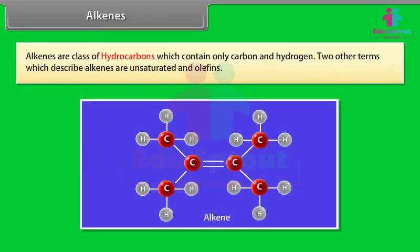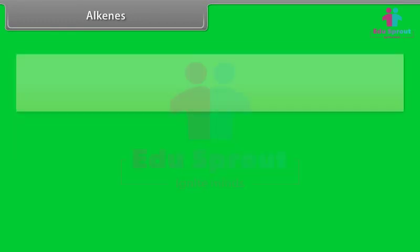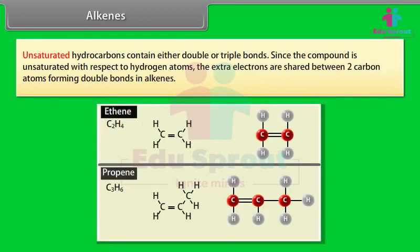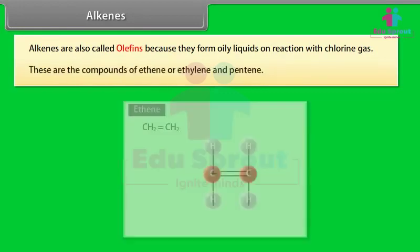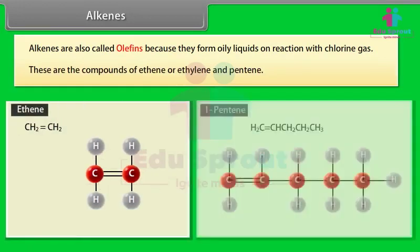Alkenes are a class of hydrocarbons which contain only carbon and hydrogen. Two other terms which describe alkenes are unsaturated and olefins. Unsaturated hydrocarbons contain either double or triple bonds. Since the compound is unsaturated with respect to hydrogen atoms, the extra electrons are shared between two carbon atoms forming double bonds in alkenes. Alkenes are also called olefins because they form oily liquids on reaction with chlorine gas.